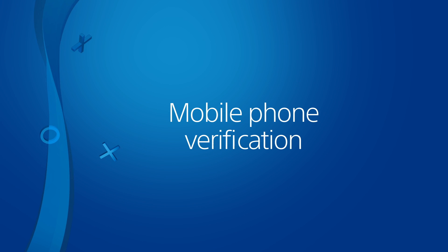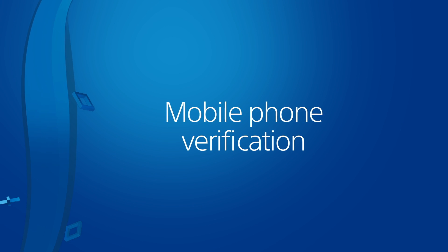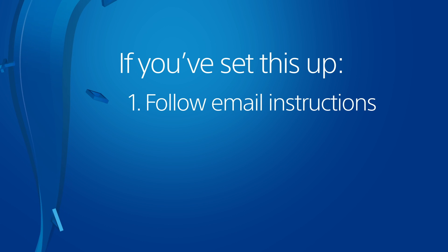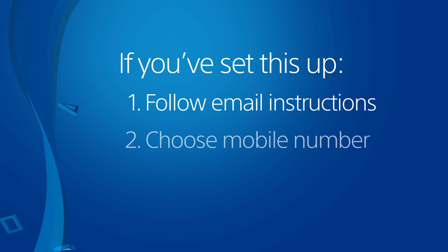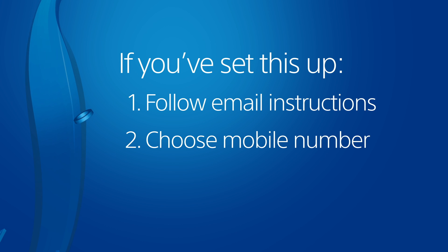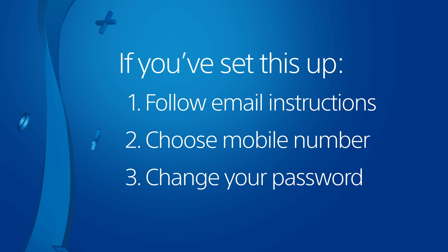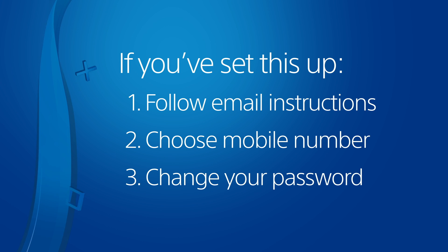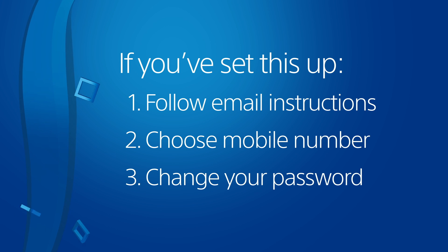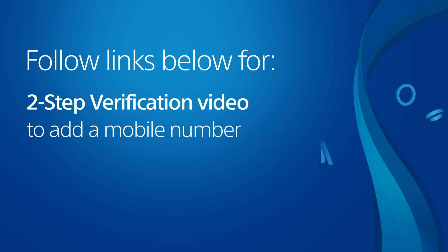If you have a mobile phone number associated with your account, it can be used as a third option for resetting your password. Choose Mobile Phone after replying to a password reset email. Follow the instructions to confirm your identity and then change your password. If there's no mobile number associated with your account, check out the two-step verification link below this video to learn how to add one.